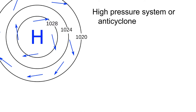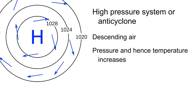In high pressure systems, or anticyclones, the weather is different. A high pressure system is characterized by descending air. Before, we had air that went up — pressure went down, temperature went down, and you got condensation. With descending air, you get the opposite: pressure and temperature increase, and as a result any water droplets in the air will evaporate. So you'll get a clear sky.